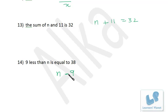The sum of n and 11 is 32, so n + 11 = 32. Nine less than n is 38, so n − 9 = 38. In all these cases we connected variables and constants with a single mathematical operation — either addition, subtraction, multiplication, or division.